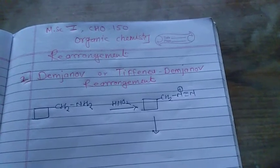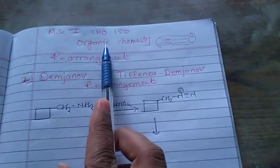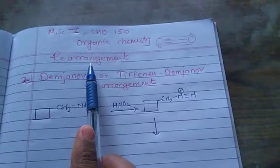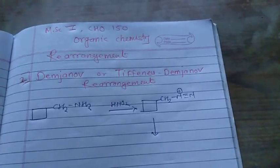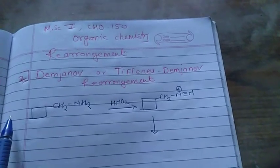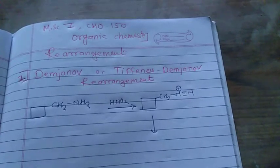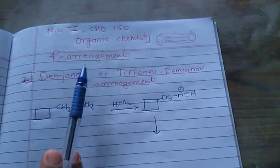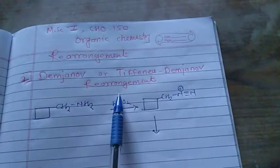Welcome to all. Here we are going to learn the emissive first year CHO 150 course organic chemistry. We learn here the rearrangement reaction. Last time we learned the pinacol-pinacolon rearrangement reaction. Today we are going to learn the second rearrangement reaction, which is also related to the carbocation as a reactive intermediate. The second rearrangement is the Demyanov rearrangement reaction.